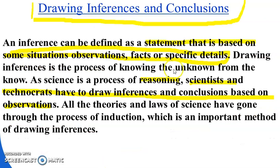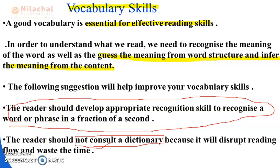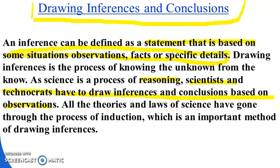After skimming and scanning, we go for vocabulary skills. In vocabulary skills, we have to identify the difficult words in the passage and find out their meanings. It is not always possible to use the dictionary — if we do, it will take a lot of time — so we have to guess the meaning of unfamiliar words. That is vocabulary skills. Finally, we draw inference and conclusion: what is your opinion and what you find in the passage — that is drawing inference and conclusion. In this way, we find out and learn the comprehension skills.